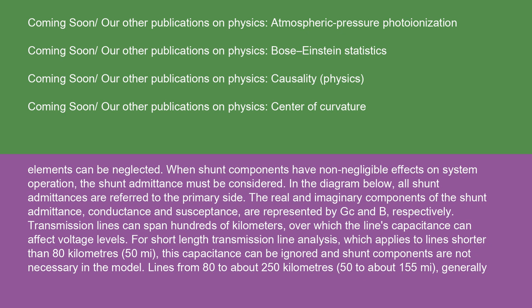Transmission lines can span hundreds of kilometers, over which the line's capacitance can affect voltage levels. For short length transmission line analysis, which applies to lines shorter than 80 kilometers or 50 miles, this capacitance can be ignored and shunt components are not necessary in the model.